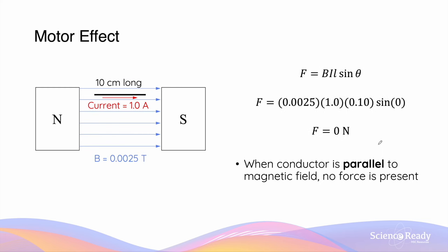Now, what happens if we take the same conductor but change the orientation such that the conductor becomes parallel to the magnetic field? Well, in this case, the angle theta in the equation becomes 0, and sin 0 degrees gives a value of 0.